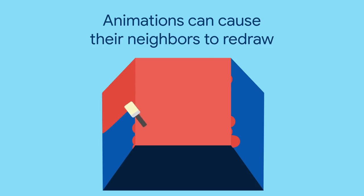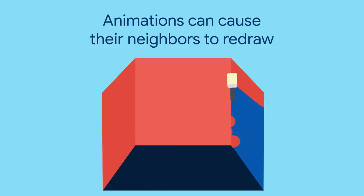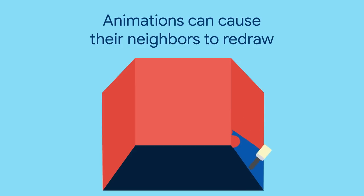This is similar to how Flutter's rendering works, with each room in our hypothetical house being a layer in Flutter's layer tree. Anytime Flutter needs to repaint something in a given layer, it winds up repainting the entire layer.